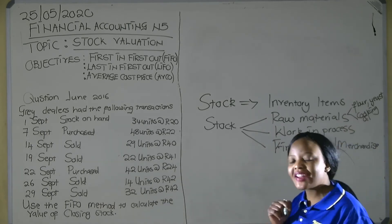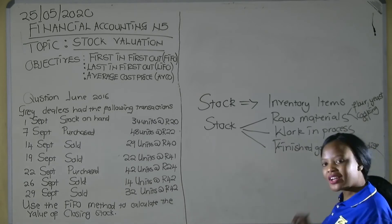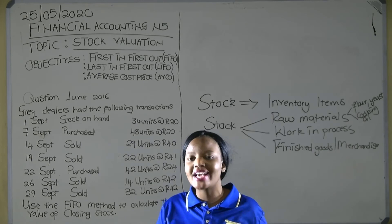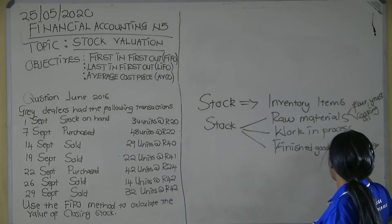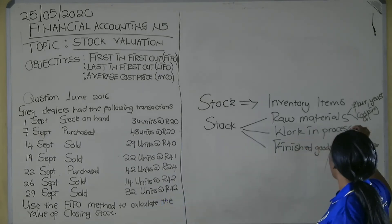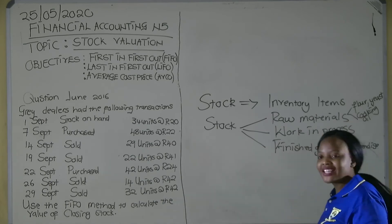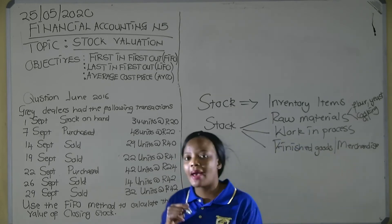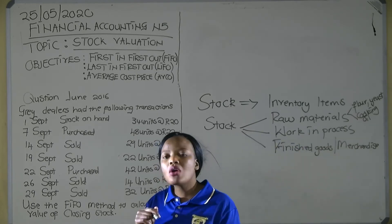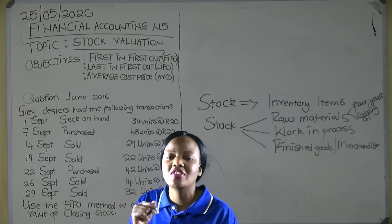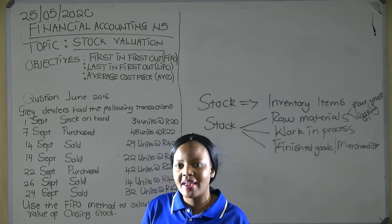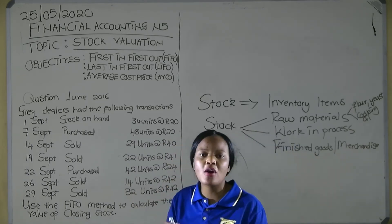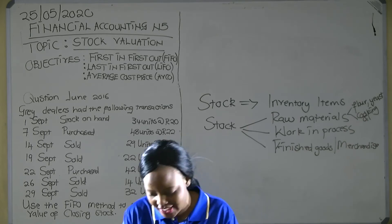Finished goods refers to the end product which is the outcome of the production process. In our bakery example, that would be a loaf of bread. Then merchandise refers to goods on hand waiting to be sold. For example, at Pick and Pay, all goods displayed on the shelf are not manufactured by Pick and Pay — Pick and Pay orders those goods from outside for the purpose of reselling.